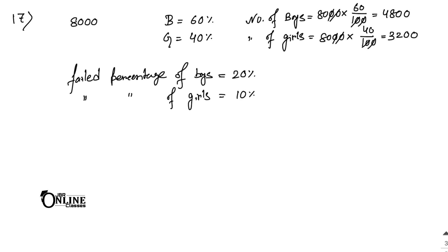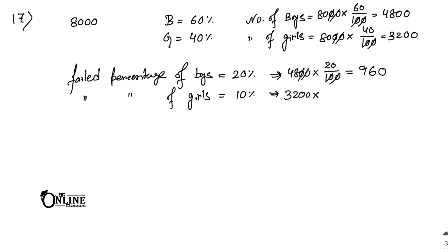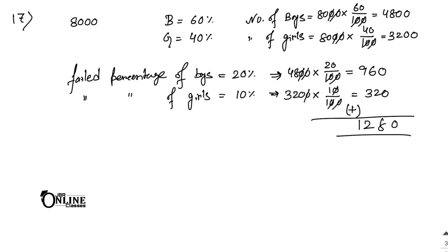Number of boys who failed equals 4,800 into 20 percent equals 960. Number of girls who failed equals 3,200 into 10 percent equals 320. Total number of candidates who failed equals 960 plus 320 equals 1,280.